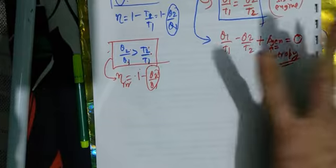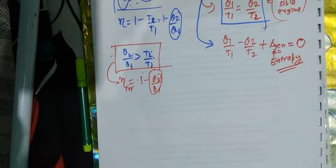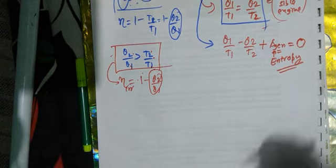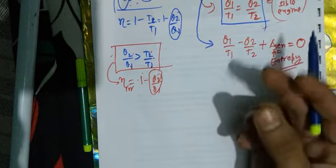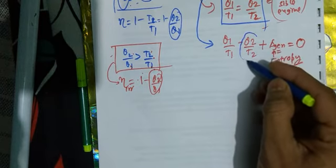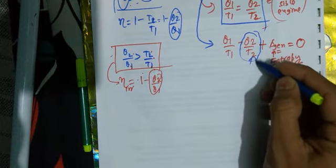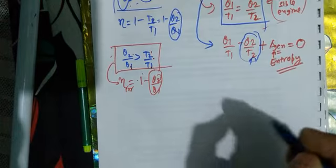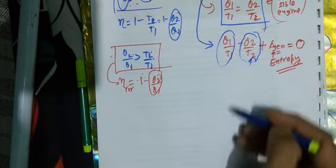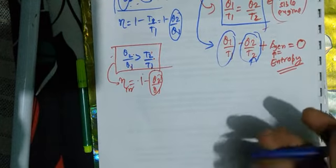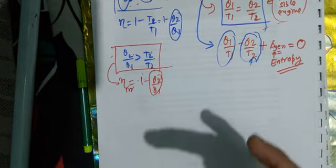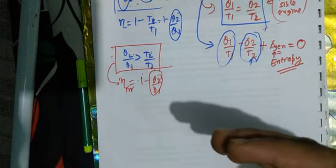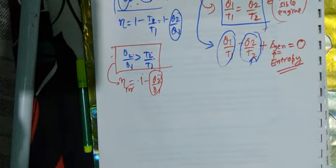This quantity was given the name entropy. Entropy is represented by S. He observed that the system's randomness increases as you move towards a lower temperature and heat transfer takes place.